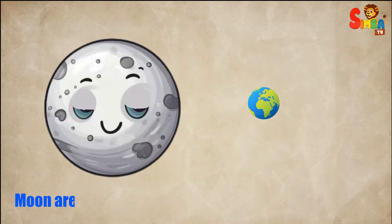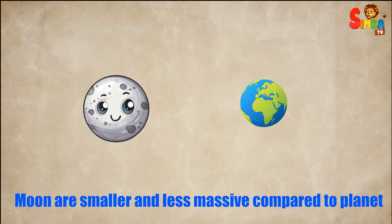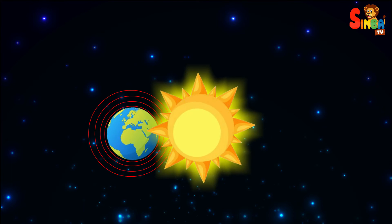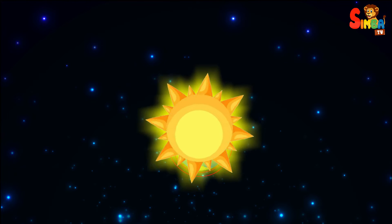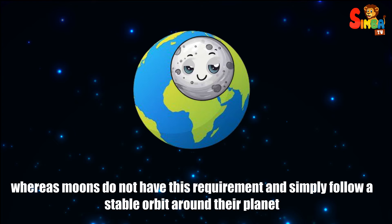Generally, moons are smaller and less massive compared to planets. One of the critical distinctions is that planets clear their orbital paths of other debris due to their significant gravitational influence, whereas moons do not have this requirement and simply follow a stable orbit around their planet.